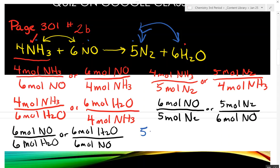So 5 moles of nitrogen gas to 6 moles of water. And what's the last combination? Flip them over.